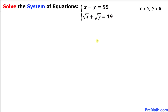Welcome to pre-math. In this video lesson we are going to solve the system of equations: x minus y equals 95, and the square root of x plus the square root of y equals 19, where x and y are both greater than 0.